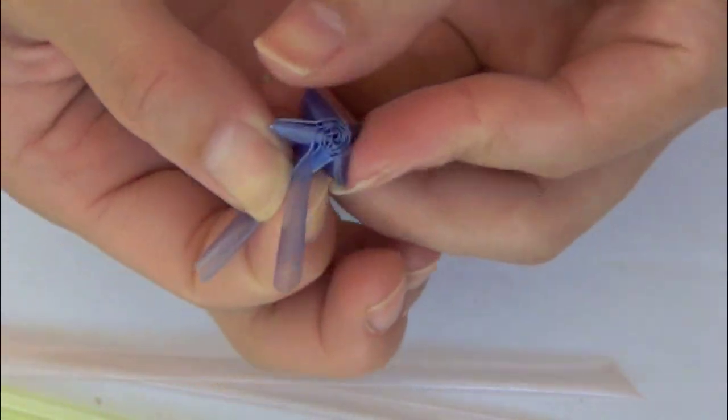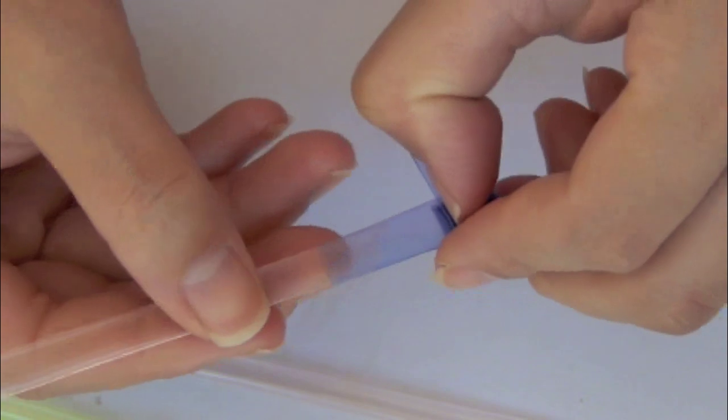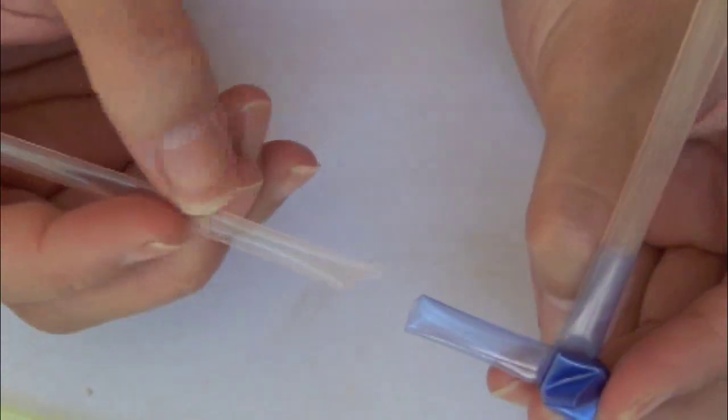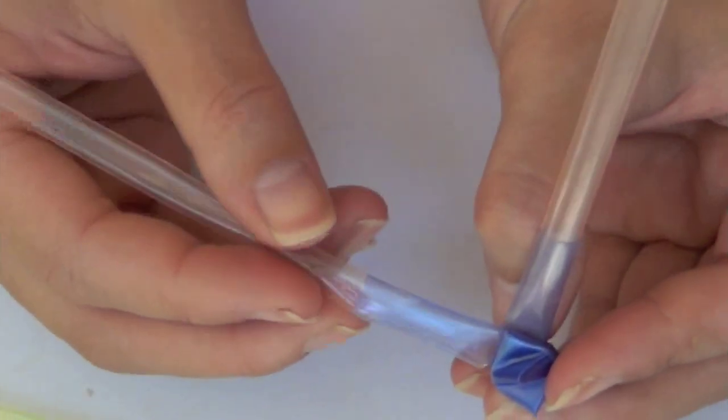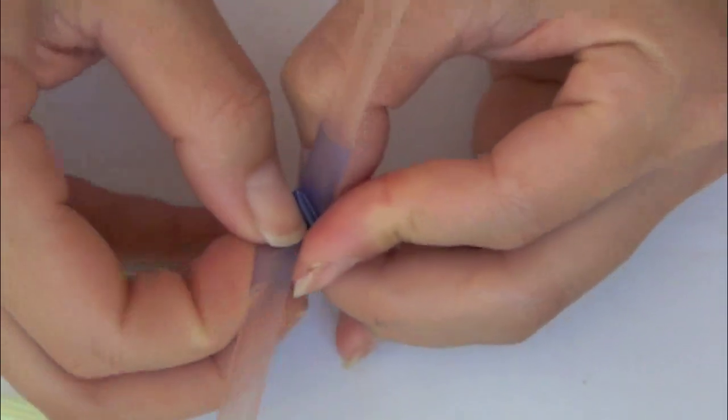When you get close to the end of the straw, insert the next colored straw into the first color. You should find it very easy to install since it has a pointy edge. And that's how easy just to add the color.